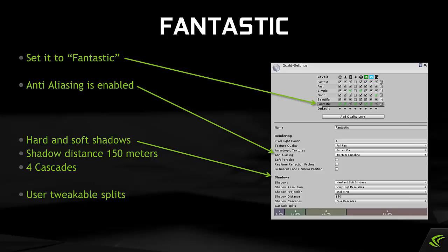With Fantastic settings, anti-aliasing is enabled, hard and soft shadows are available, the shadow draw distance is set to a much more acceptable 150 meters, and there are 4 cascades available. Note also that you can choose the distance at which the cascades become active.